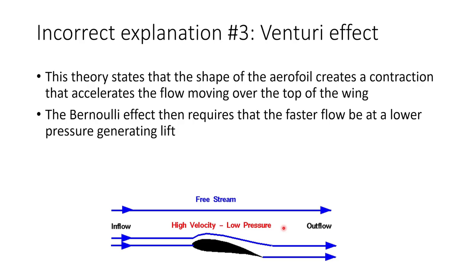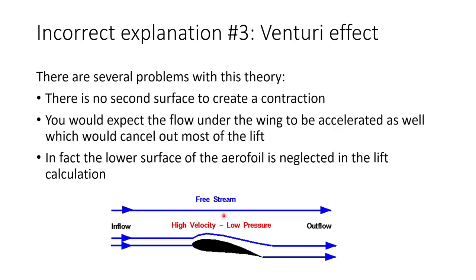A third incorrect explanation is the venturi effect, which says that the wing accelerates the airflow by creating a contraction above the wing that accelerates the free stream, much like a nozzle or a venturi tube. Again, the Bernoulli effect is invoked to say that because we've accelerated the air, it must be at a lower pressure, and therefore we get lift. There are several problems: there's no second surface to create a contraction, so the air isn't being accelerated through a nozzle. Also, this explanation would predict flow under the wing is accelerated too, creating negative lift. The lower surface of the aerofoil is neglected completely, and we know the shape of the lower surface is really important for generating lift.